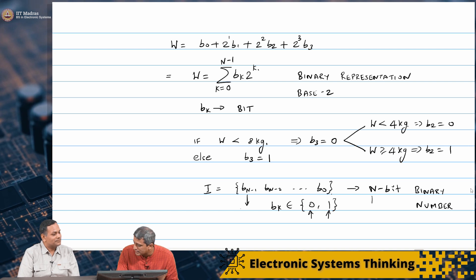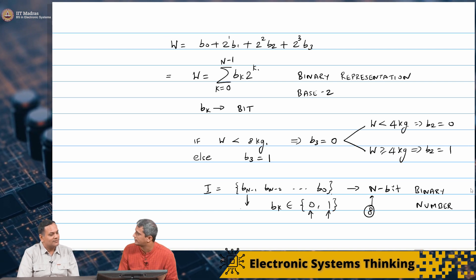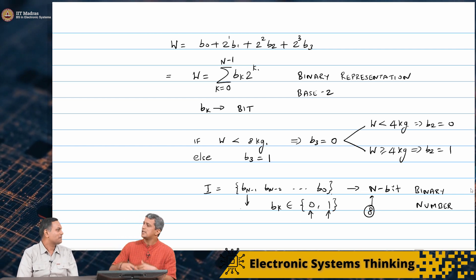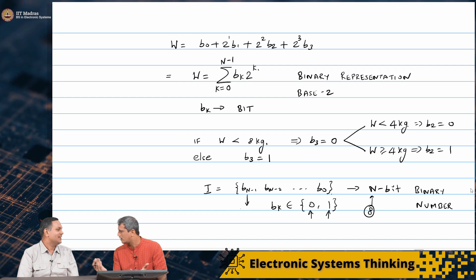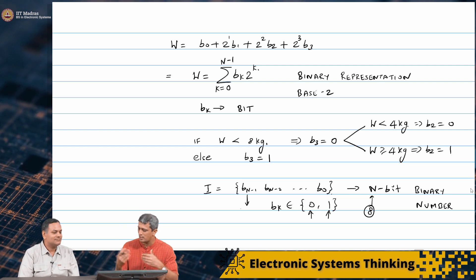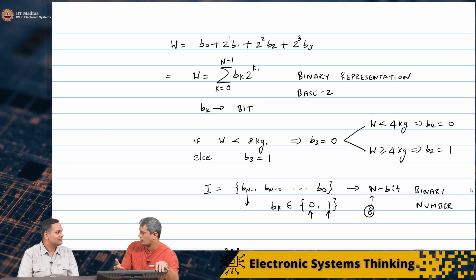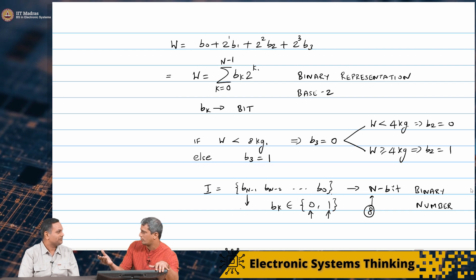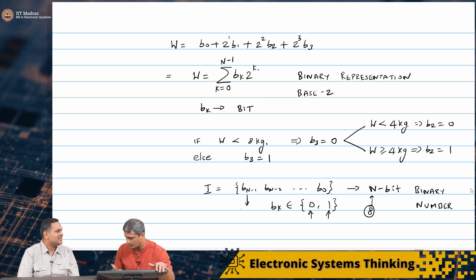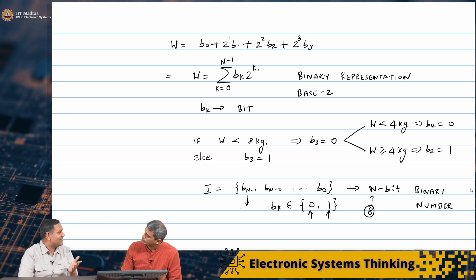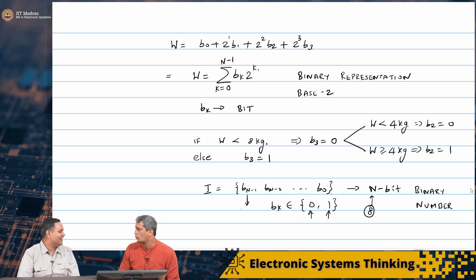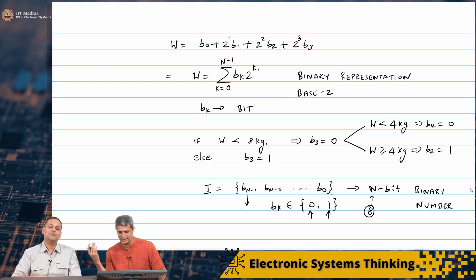If n happens to be 8, then it has a special name - it is a byte. If n is 16, it is a word. If n is 32, it is called a d-word, double word. Typically the instructions in a microprocessor or even the data stored in memory are described in terms of bytes, words and d-words. A lot of microprocessors are advertising 64-bit now, and you can keep going higher and higher.